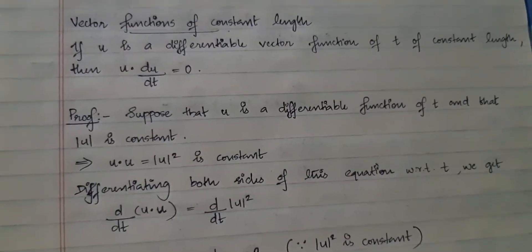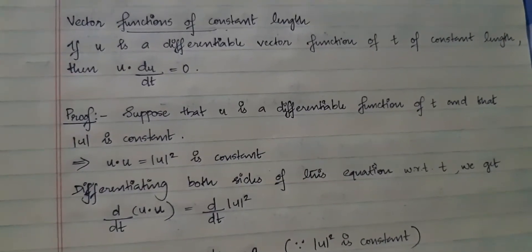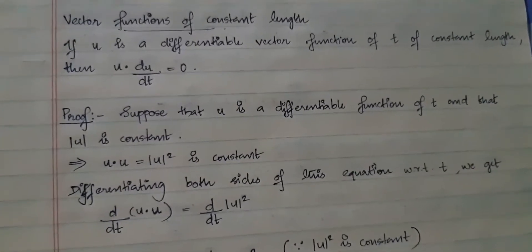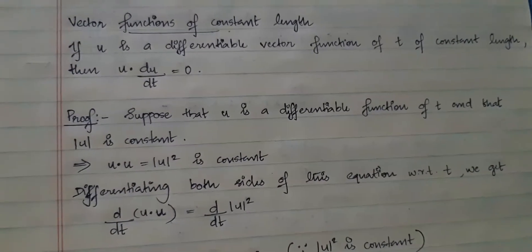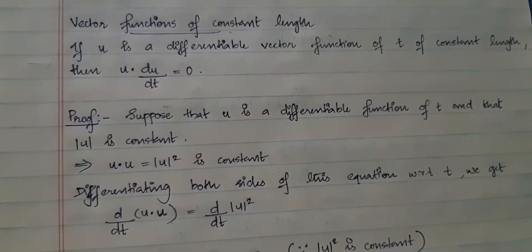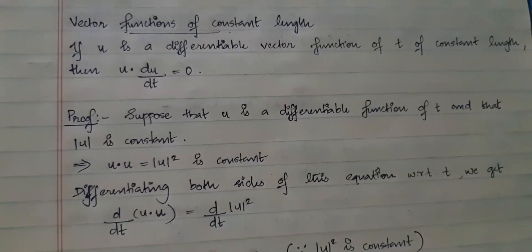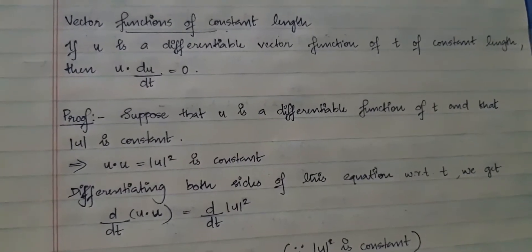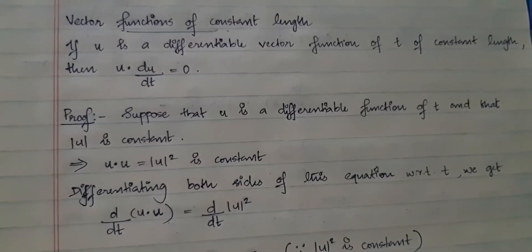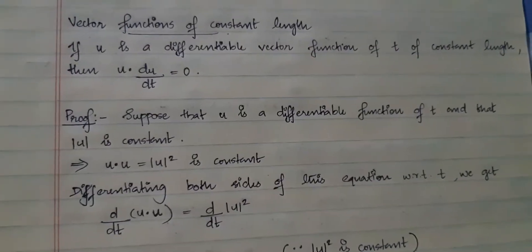Before that, there is a small topic to be covered, which is vector functions of constant length. It is said that if u is a vector function and it is differentiable and if u is of constant length, then u and its derivative are orthogonal to each other. Let us see how it happens.